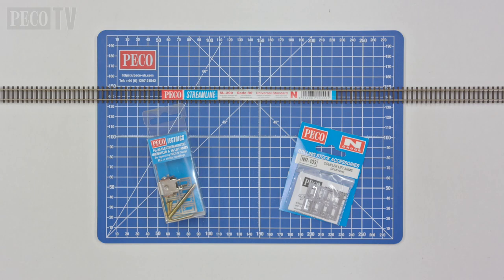Alongside the Electromagnetic Uncoupler, we will be using Code 80 N-Scale Track and from the Peco Rolling Stock accessories, the NR-103 Coupler Lift Arm Packs sold separately.